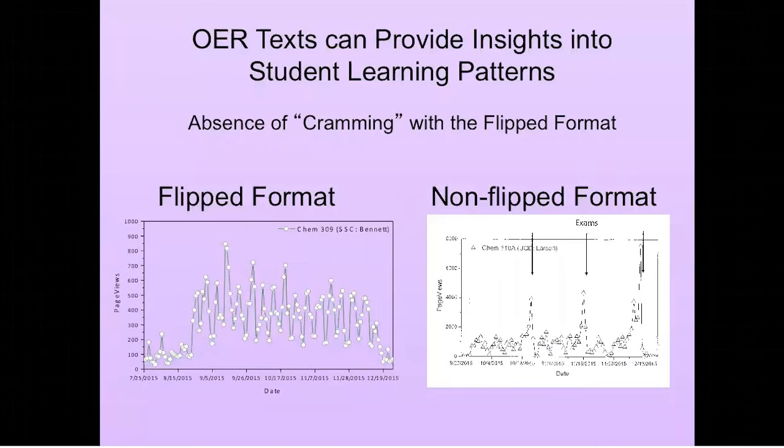One of the great things about OER texts is that it does provide insights into student learning patterns. If we look here on the left, here's the data from my class from the previous semester and we can see that there's a pretty constant use and interaction of the students with the textbook. Then Delmar Larson, bless his heart, was willing to share his data with a non-flipped format. These arrows indicate where the exams are, and if we look at the data we can see that there is a spike of student interaction with the text right before the exam, which would imply cramming—just a one small example of some of the added benefits of an OER text and my own personal pitch for the flipped format.